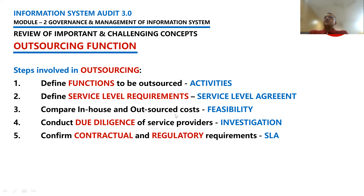For example, as a university chancellor, if students need a bus service, either the university has its own buses or outsources bus services to someone else. Since transportation and logistics is not the core function of the university, it is legally entitled to outsource it. Before outsourcing, I need to compare the cost of running my own buses versus the cost of outsourcing that function — evaluating feasibility. The next step is to conduct due diligence for the service provider — trying to get references from the vendor's clients about his level of service.